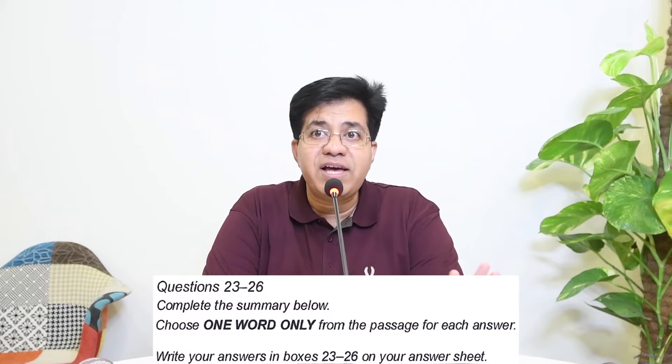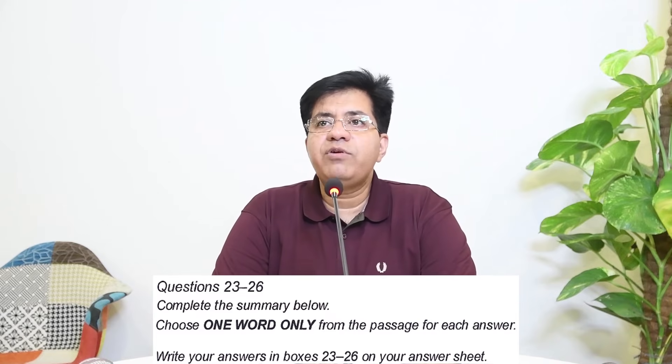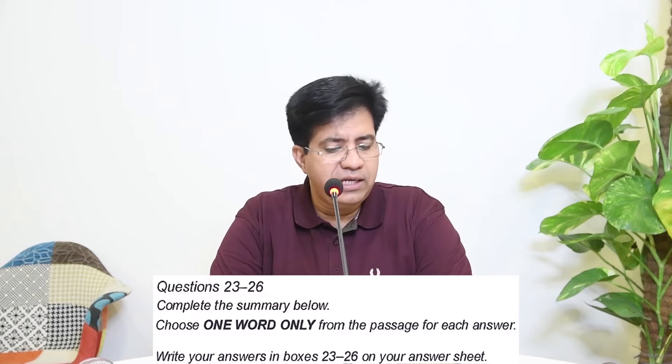Summary completion questions have answers in order. Looking for the university mentioned in the summary — found it in paragraph G. All four answers (23-26) will be in paragraph G in order. With four questions in one paragraph, you can manage it in five or six minutes.